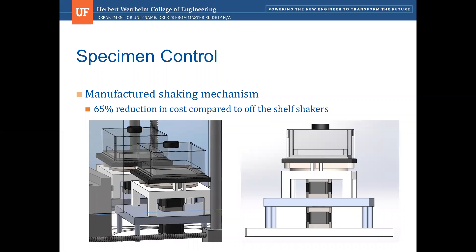For specimen control, we needed to provide a shaking mechanism for the cultures, and we needed linear, orbital, and double-orbital shaking patterns. Off-the-shelf shakers were too expensive for us, so we chose to manufacture our own and were able to provide a 65% reduction in cost compared to those off-the-shelf shakers.